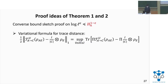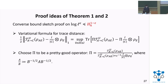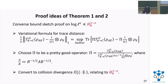For the proof ideas of the converse part, we first use the variational formula to lower bound our trace distance. We then choose the operator pi to be a pretty good operator. The advantage of a pretty good operator is that it can be converted to collision divergence, which can be rotated back to hypothesis-testing entropy, and we can prove our converse bound.